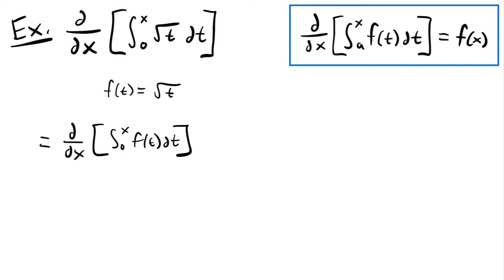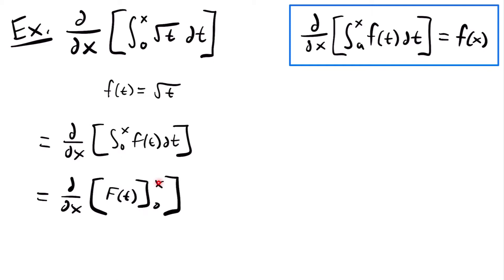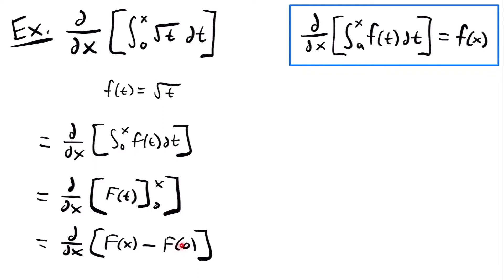If we go through with the integral, this will be equal to ddx of the antiderivative of our function evaluated from 0 to x. If we plug in x and 0, this will be equal to the derivative of capital F of x minus capital F of 0. The derivative of F of 0 is 0 because F of 0 is just a constant — it's not defined with x, so the derivative is 0. The derivative of the antiderivative capital F of x is just the original function small f of x.